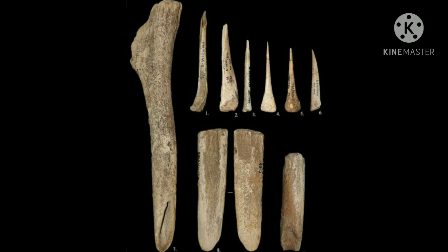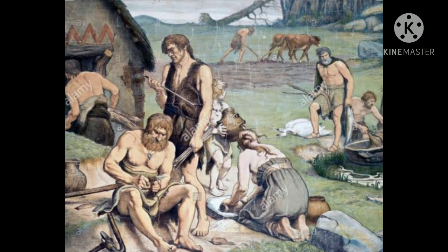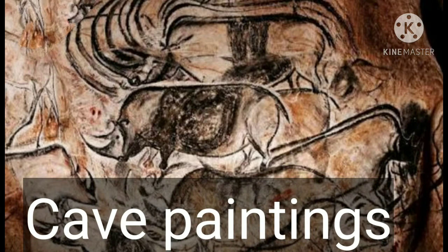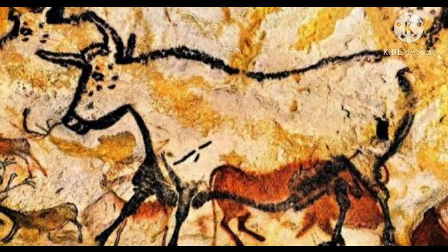Homo sapiens also began to use ivory and rare stones of the quartz variety for making tools and other articles. He had made significant progress in gaining knowledge of his environment and in techniques of making tools and obtaining food. This enabled him to stay in one place for a longer period of time, and groups of Homo sapiens had begun to build huts and live in them. They had also started celebrating social festivals, and many artistic objects and cave paintings created by Homo sapiens were possibly meant for these festivals.